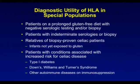HLA testing is also useful for relatives of biopsy-proven celiac patients, including infants who have not yet been exposed to gluten. There are patients with conditions more strongly associated with increased risk for celiac disease, including type 1 diabetes, Down syndrome, Williams syndrome, and Turner syndrome. Patients with autoimmune diseases on immune suppression may have falsely negative screening antibody tests, so under these circumstances antibody testing may be negative. Remember that HLA testing does not change depending upon your diet — even if a patient is on a gluten-free diet or has never been exposed to gluten, the HLA genes do not change. It is important that physicians consider genetic testing for celiac disease when a patient comes to them already on a gluten-free diet and has negative antibody testing.